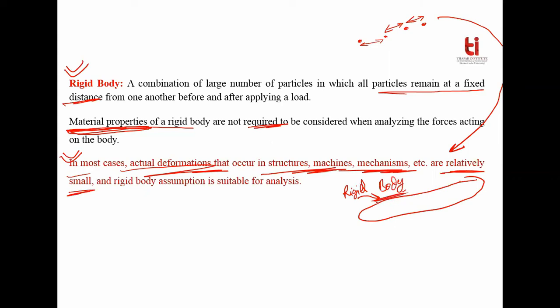If the deformation in a body is very small, you can consider it as a rigid body and apply the concept of equilibrium of rigid body to analyze the forces and moments acting on it. In this way you define the element as rigid or flexible: if deformation is very small we call it a rigid body, otherwise we call it a deformable body.